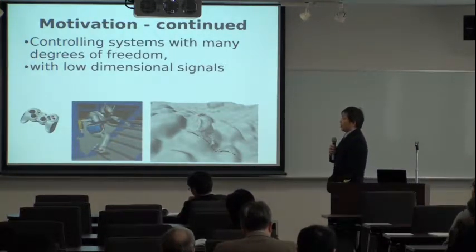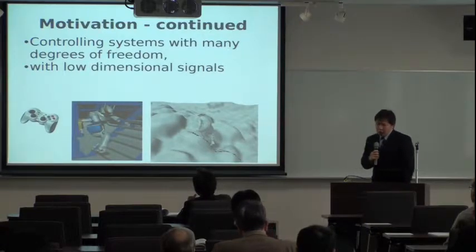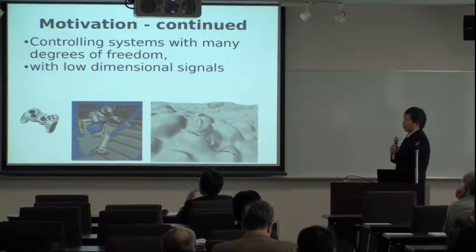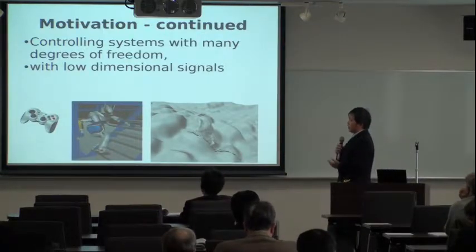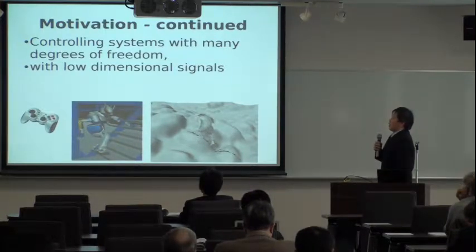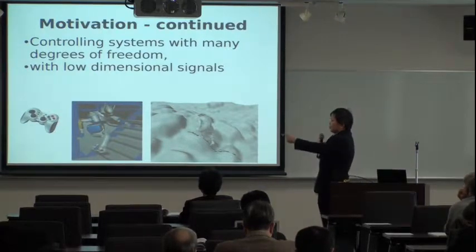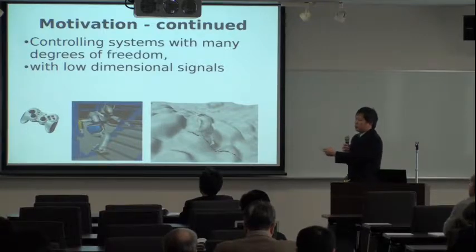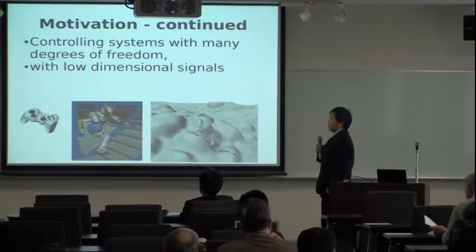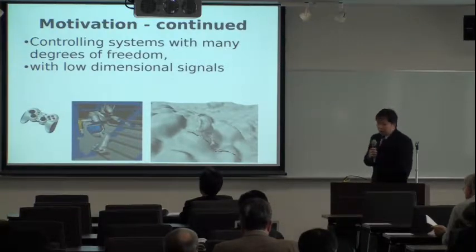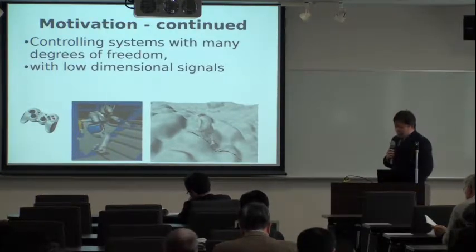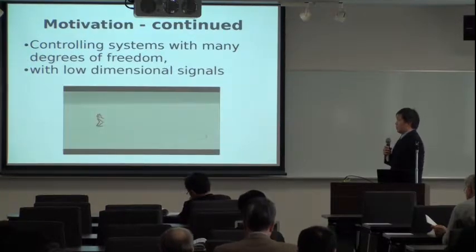We also have applications like robotics or computer games. When we want to control robots or humans, their degrees of freedom is very high — usually 30 or 40 joints — all of which have to be controlled simultaneously to conduct motions like climbing stairs or traversing uneven terrain. We want to control these high-dimensional systems using low-dimensional signals like a gamepad, just specifying the direction or pressing a button to jump.